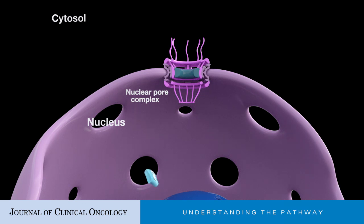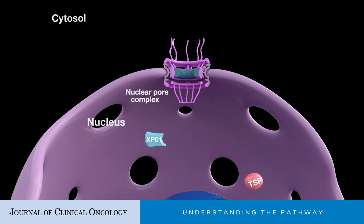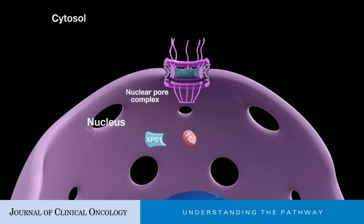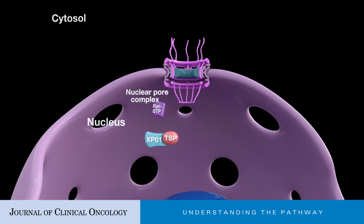Proteins with size larger than 40 kilodaltons are exported from the nucleus to the cytoplasm with the aid of specialized carrier protein exportin-1, also known as chromosome maintenance region 1 (CRM1). XPO1 recognizes a nuclear export signal (NES) sequence in the target protein — a short amino acid sequence of a few hydrophobic residues in the majority of proteins. XPO1 recognizes this NES, allowing attachment that results in movement of the cargo protein from the cell nucleus to the cytoplasm through the nuclear pore complex.